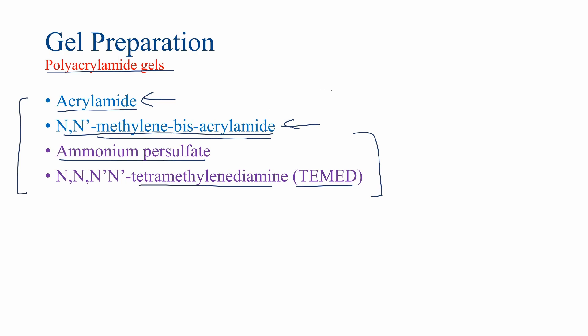The major components of the acrylamide gels are the acrylamide and the bisacrylamide. However, the ammonium persulfate and the tetramethylenediamine are important in facilitating the polymerization reactions of acrylamide monomers as well as the cross-linking of bisacrylamide in between acrylamide polymers. I'll discuss all of these components and how they play a role in polyacrylamide gel creation — more specifically, the reactions that happen in the creation of polyacrylamide gels — in the next slides.